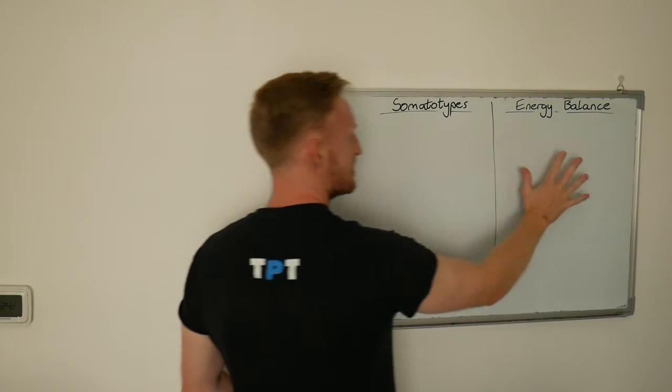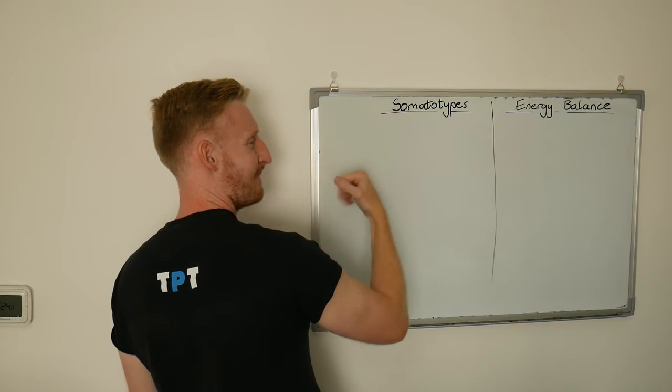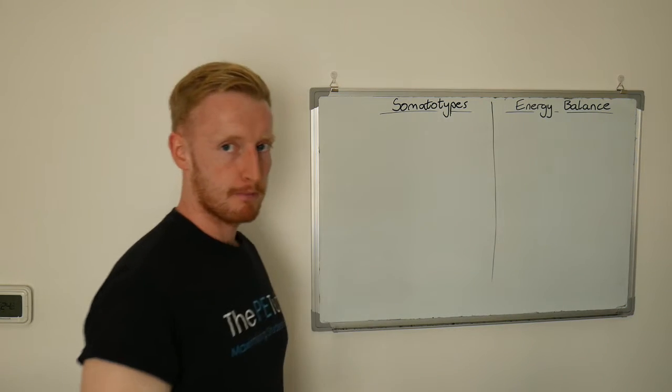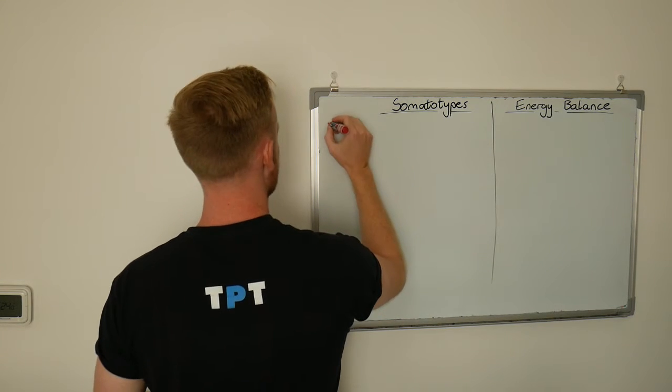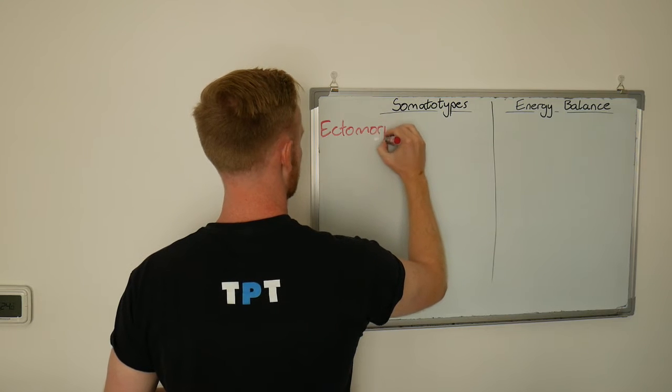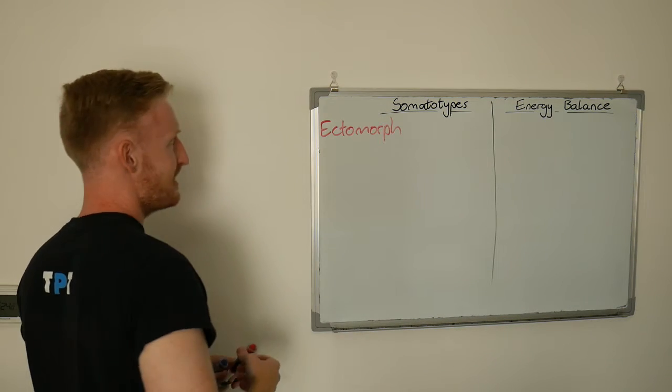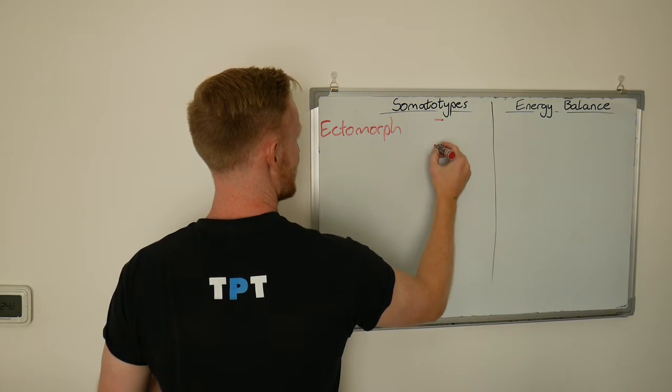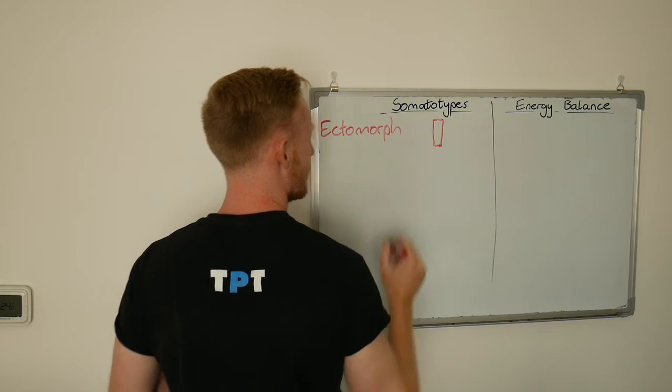When we look at energy balance this is one way in which we can undermine somatotyping, but we'll get to that later on. So somatotypes, we have three different types. The first is ectomorph, an ectomorph. This is typically someone who is narrow at the top across the shoulders and narrow at the hips, giving them this long linear shape.